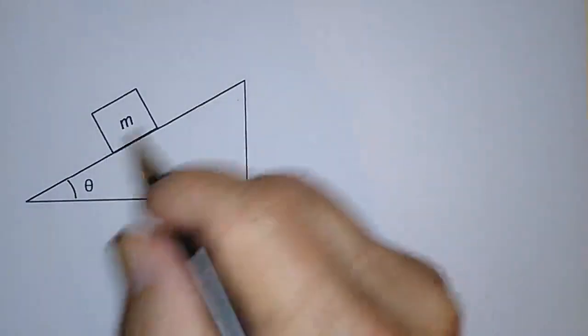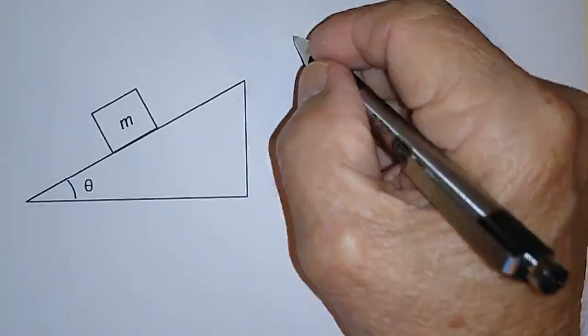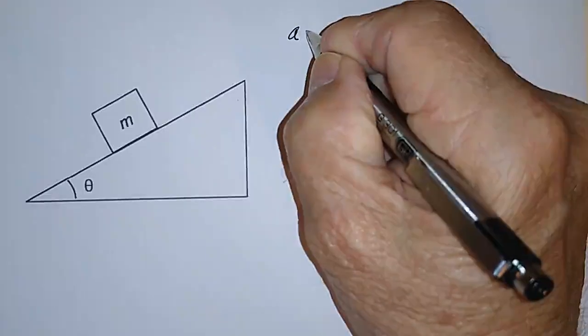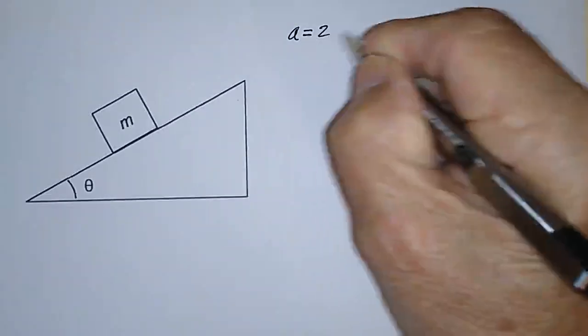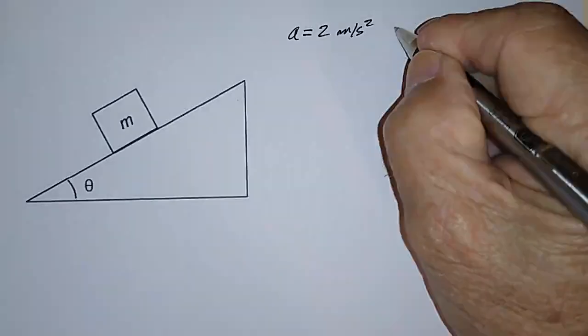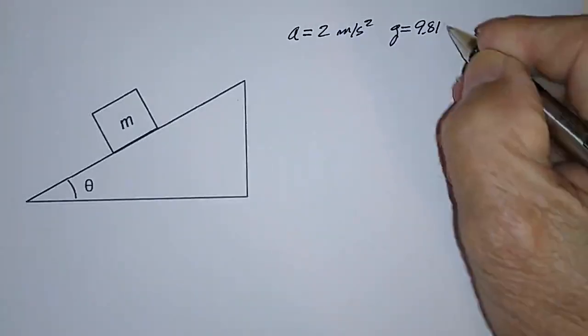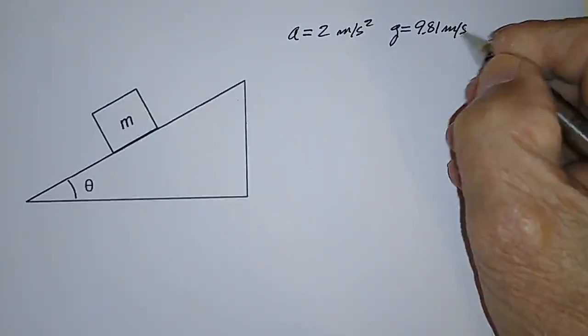Such that it ends up accelerating at the rate of 2 meters per second squared. So we're going to say that the acceleration we want is 2 meters per second squared. Also, we're going to say that the acceleration due to gravity is 9.81 meters per second squared.